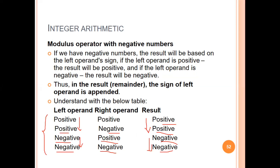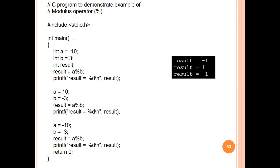For example: if a is equal to -10 and b is equal to 3, the first operand is negative, so the result is negative — the result is -1. Similarly, if a is 10 and b is -3, the first operand is positive, so the result is also positive.